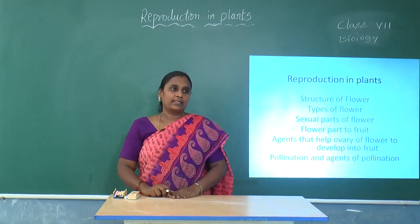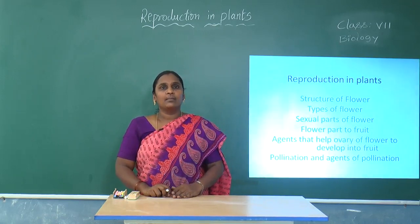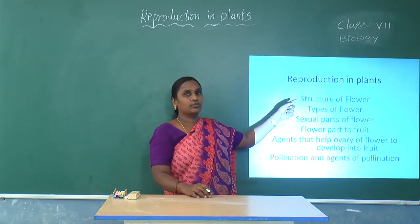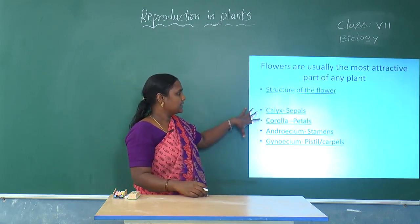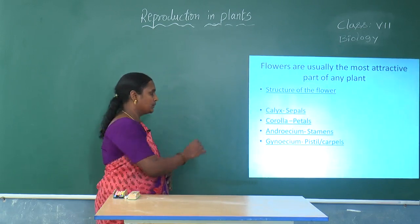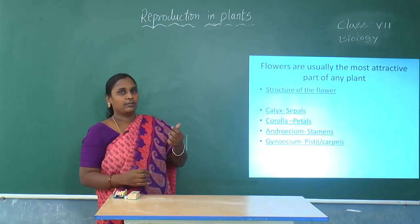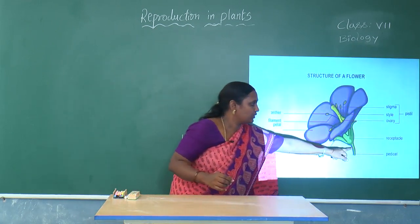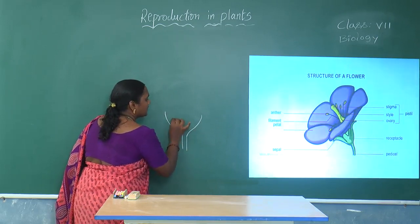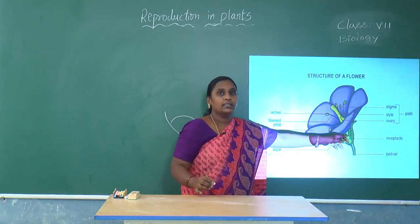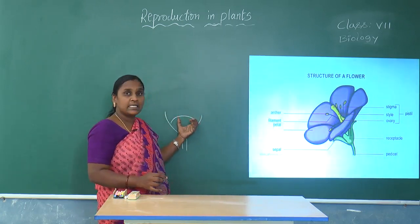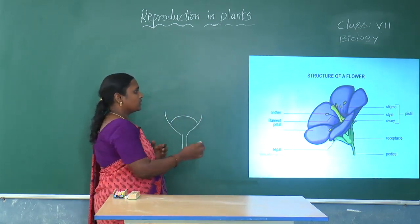Flower is the reproductive part and is the attractive part. During spring season we see the many fragrances of the flowers. So let us learn about the structure of the flower. It mainly consists of four whorls sitting on the thalamus. The stalk of the flower is called the pedicel. Then comes the next part called the thalamus — this is the swollen part on which all the four whorls are arranged.